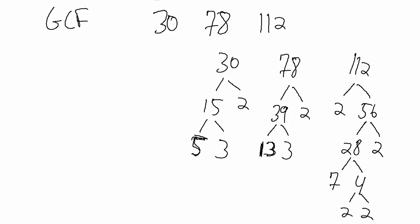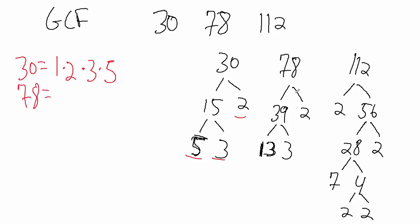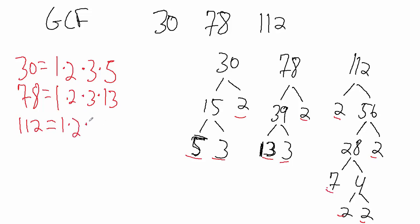So now, just like before, we come to the side and write out the factorizations: 30 equals 1 times 2 times 3 times 5. And 78 equals 1 times 2 times 3 times 13. And 112 equals 1 times 2 times 2 times 2 times 2 times 7.